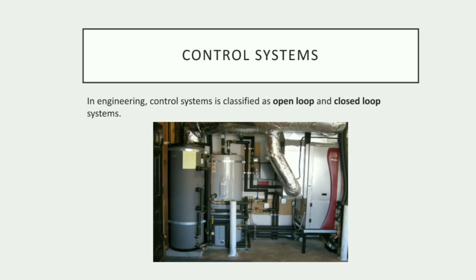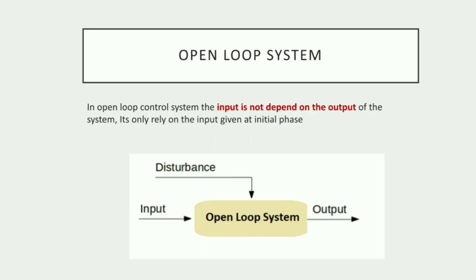Open loop and closed loop systems were introduced in the domain of control system engineering. In control system engineering, boilers and valves are commonly used, and the main intention of control systems is to control temperature and pressure. From this, the concept of open loop and closed loop was derived and extended to many technologies, including automotive.